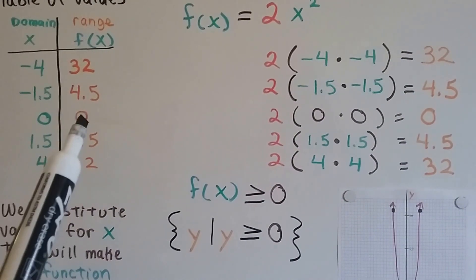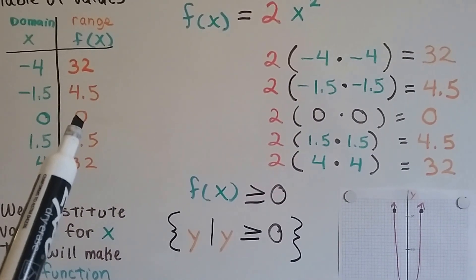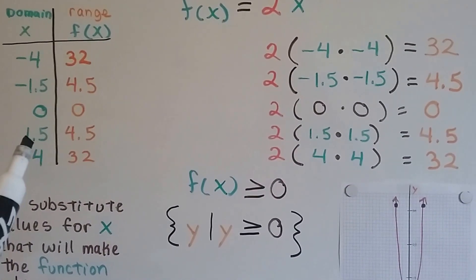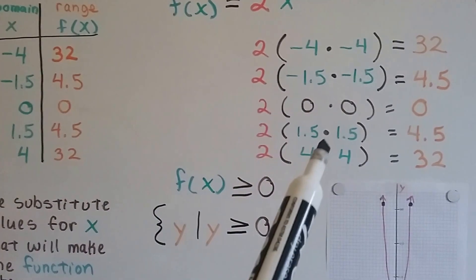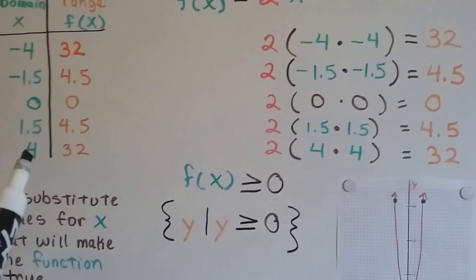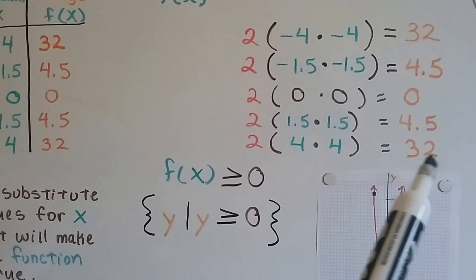If x is a 0, then the range, y, function of x is a 0. If it's a positive 1.5 times 2, it's going to be 4.5. If it's a positive 4, it's going to be 32. See?